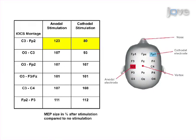Different electrode montages can vary the effects of tDCS. For example, whether cortical excitability is increased or decreased is dependent on stimulation polarity as well as other stimulation parameters.